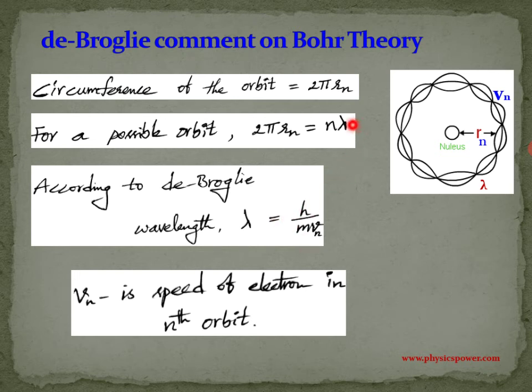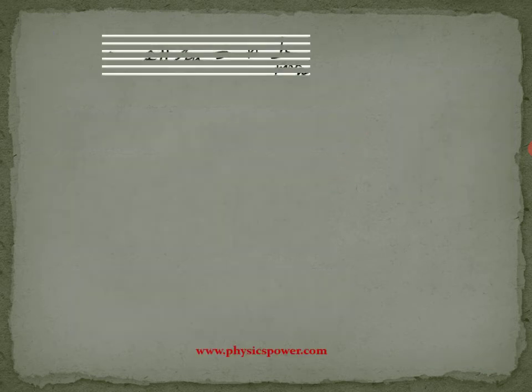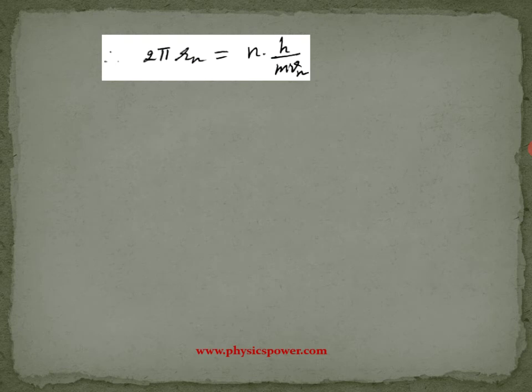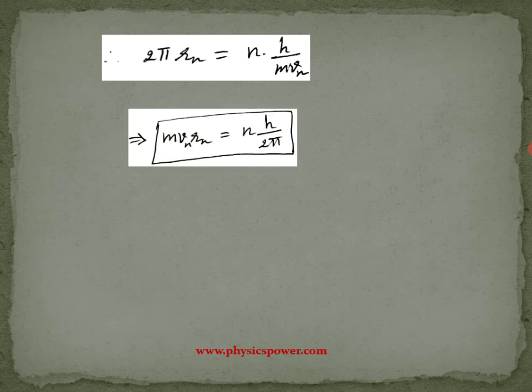Substituting the lambda expression into the orbit condition: 2πrn equals n times h by mvn. Rearranging this equation, moving mvn to the left side, we get mvn rn equals n times h by 2π.